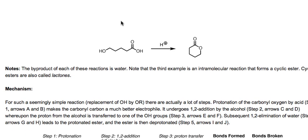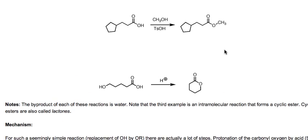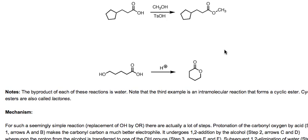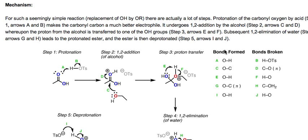This last example commonly causes problems for students because it involves ring formation. Here we have a carboxylic acid where we're not adding a separate alcohol — the carboxylic acid is connected through the alkyl chain to an alcohol. Like clasping a belt to form a loop, the OH reaches around to the carboxylic acid and forms a cyclic ester called a lactone, along with a molecule of water. No different bonds are formed or broken — it's still ester formation, just forming a ring. This is a very popular type of exam question.